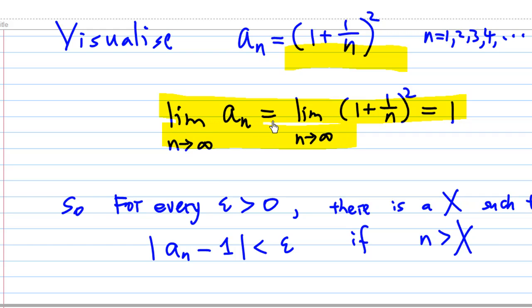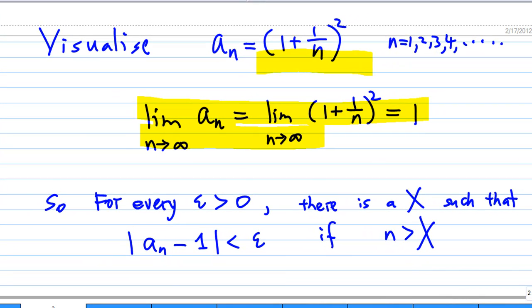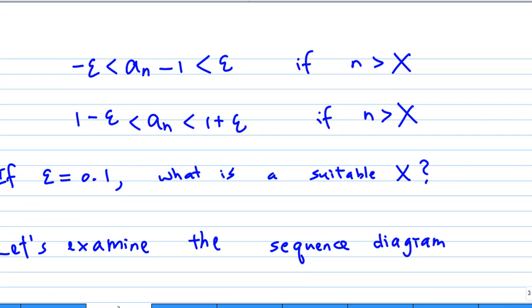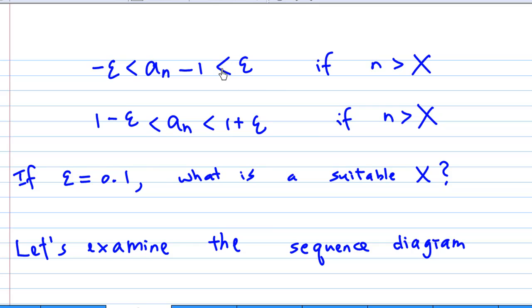By definition, it means that for every ε > 0, there is an X such that |a_n - 1| < ε if n > X, which means a_n will be less than 1+ε and greater than 1-ε if n > X. Rearranged, it means a_n is between 1+ε and 1-ε if n > X.